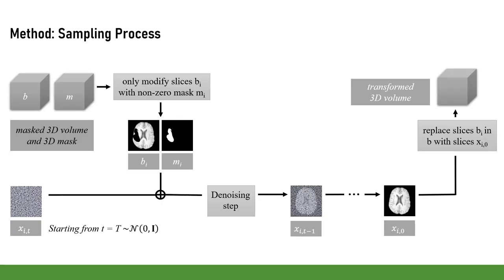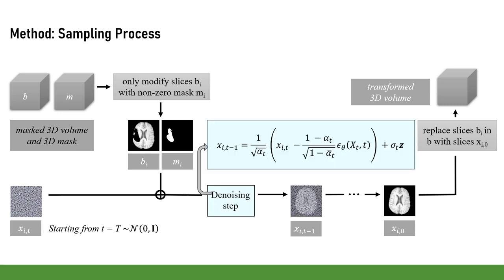During sampling, we loop through all slices of the masked 3D volume and only modify the slices bᵢ with non-zero mask mᵢ. For each of these slices, the starting point xᵢ_T is set to random Gaussian noise. We apply the denoising for all T time steps until we get the prediction xᵢ₀ for each slice with a non-zero mask.